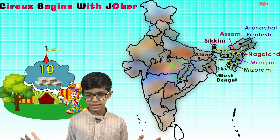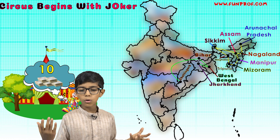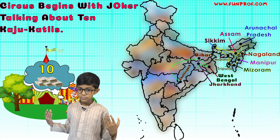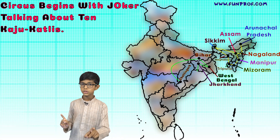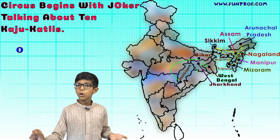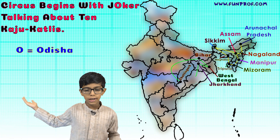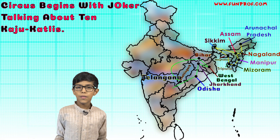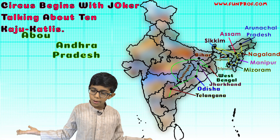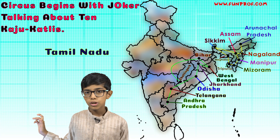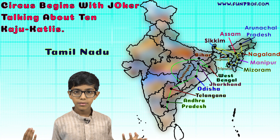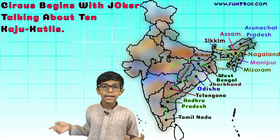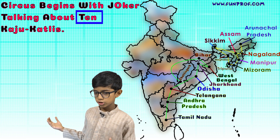J for jokers — but Odisha is missing in jokers, so O stands for Odisha. Talking stands for T and T for Telangana. Tamil Nadu also starts with T, so Tamil Nadu comes from talking about ten — T for ten.